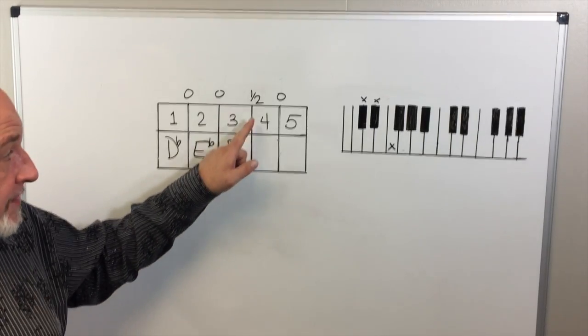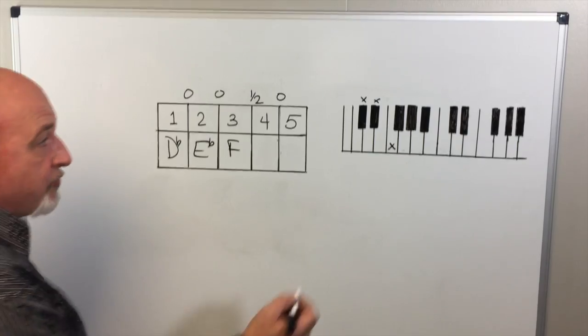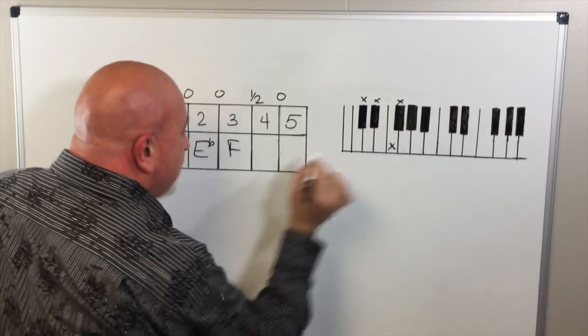Between the third and fourth position, we have a half step, which means we don't skip a key, which means we're going to jump up here to G-flat.